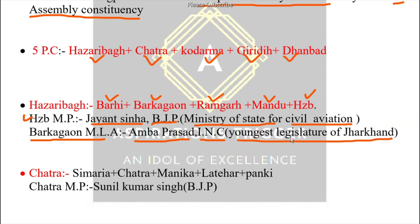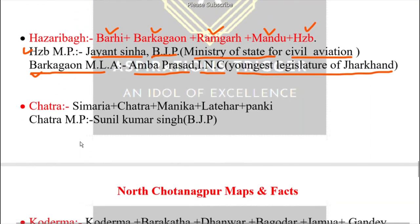This question may be asked: the youngest legislator of Jharkhand, Amba Prashad, belongs to which Assembly Constituency? The answer is Barkatha — from the Koderma Parliamentary Constituency area.